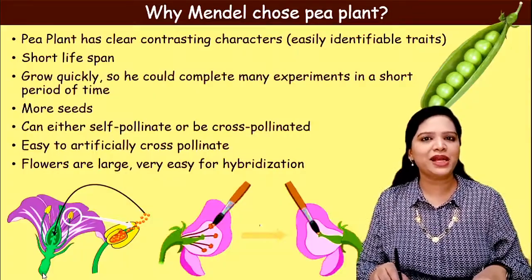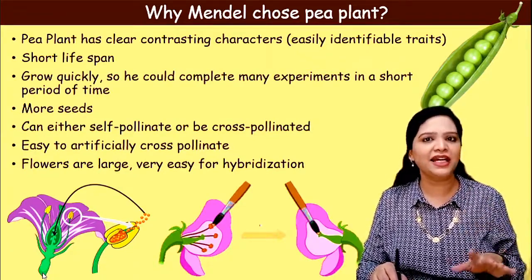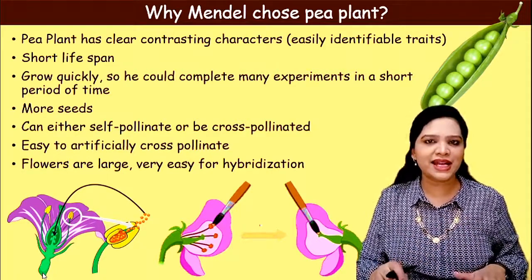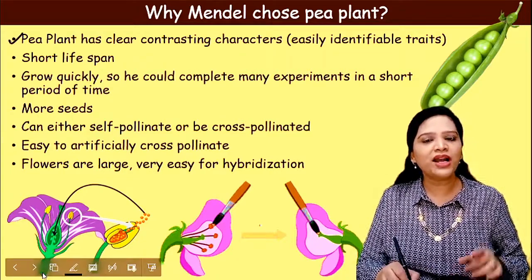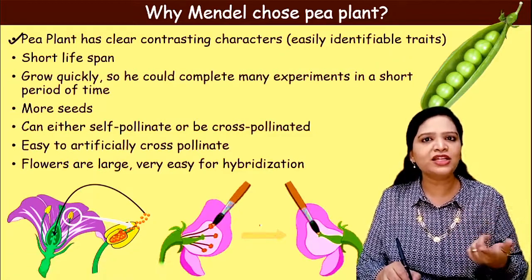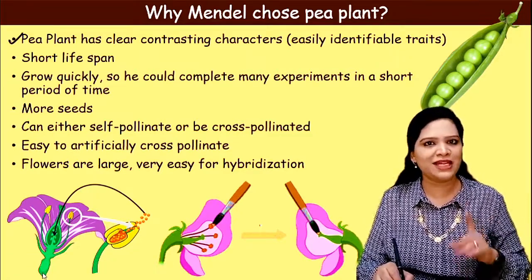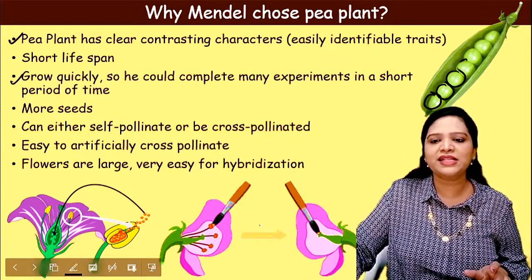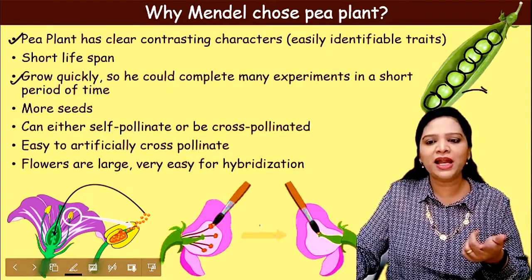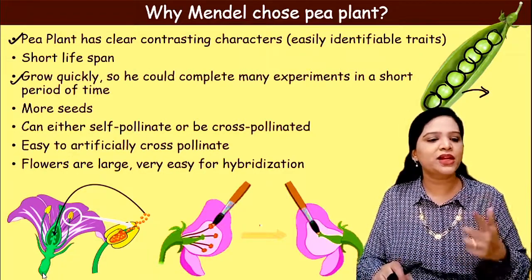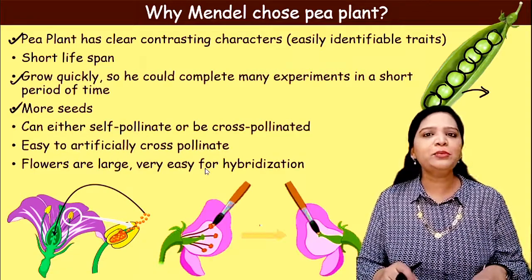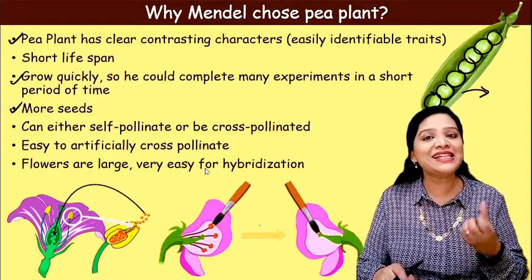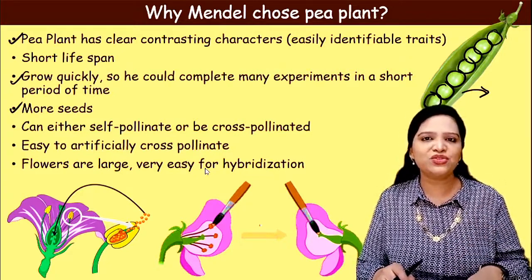Why did Mendel choose the pea plant? First, the pea plant shows clear contrasting characters that are easily identifiable, such as height, flower color, seed size, and seed color. Second, the lifespan of the pea plant is short, so he could grow plants quickly and complete many experiments in a short time. Third, the number of seeds produced in pea pods is large. Fourth, the pea plant can be both self-pollinated and cross-pollinated. Fifth, the flowers are large in size, making cross-pollination easy to perform.